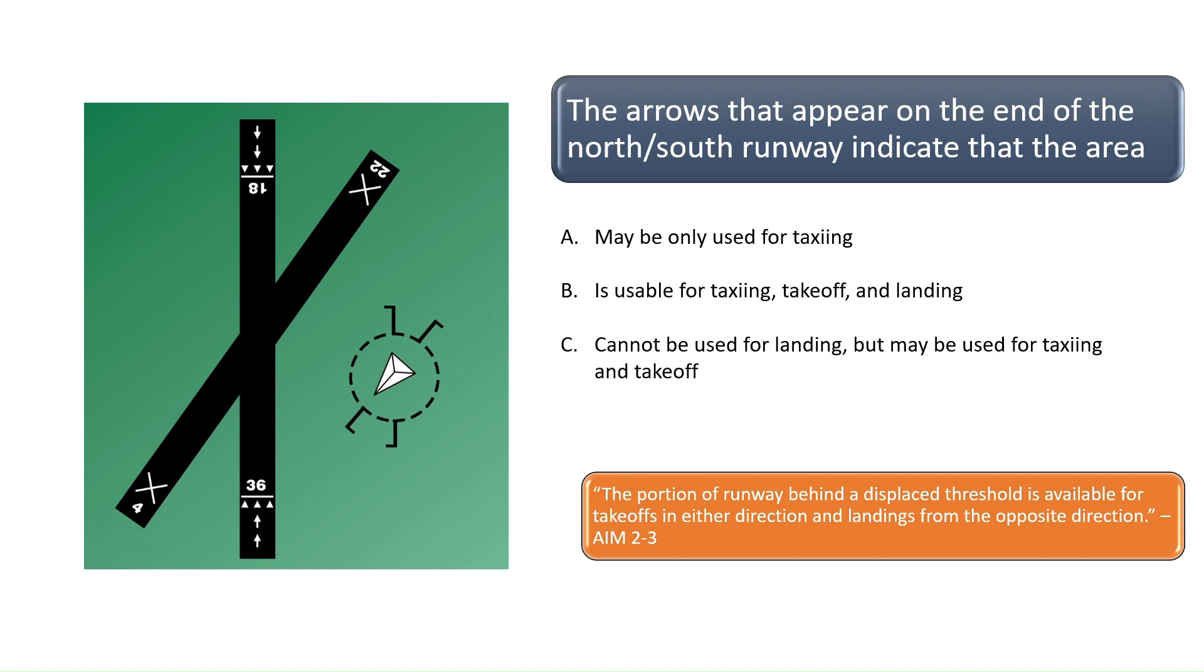So in this case, a pilot could taxi and take off in the area with the white arrows just before runway 3-6 but could not use it for landing on runway 3-6. A pilot could use this area for extra landing roll when landing on runway 1-8. The correct answer is C.